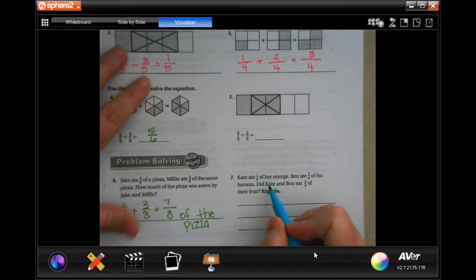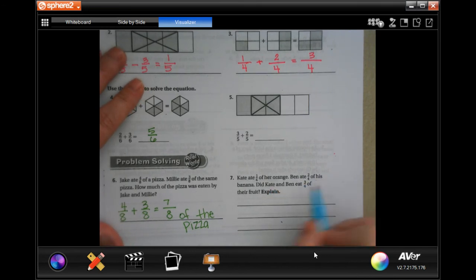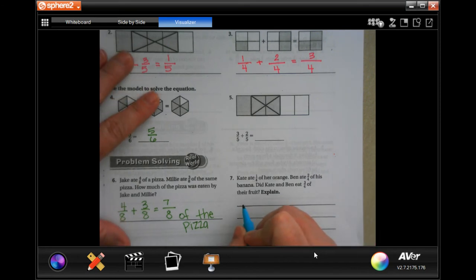Kate ate one quarter of her orange, then Ben ate two quarters of his banana. Kate and Ben eat three quarters of their fruit. Explain. Well, so one plus two is three and the denominator would stay the same. So yes, one quarter plus two quarters equals three quarters.